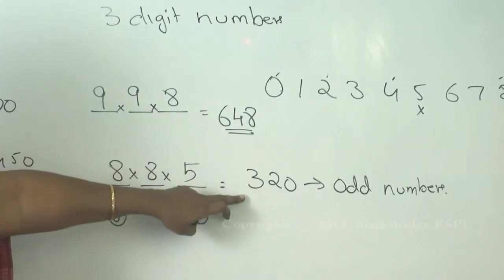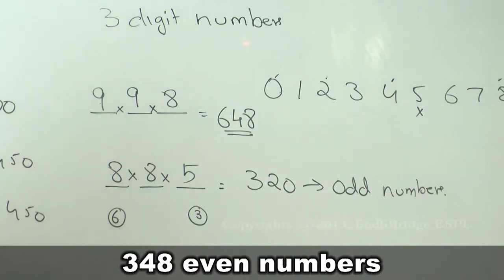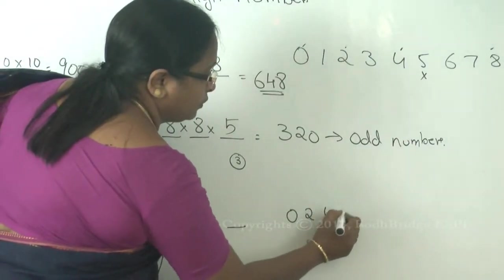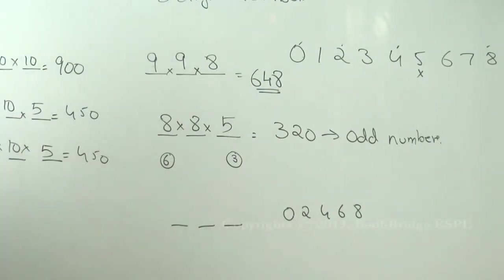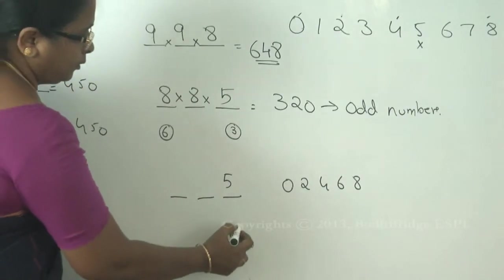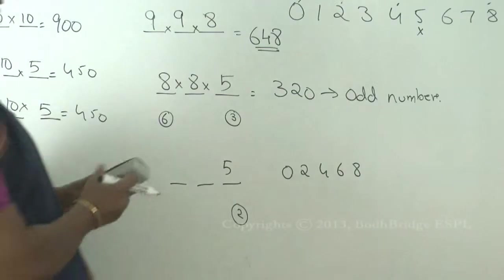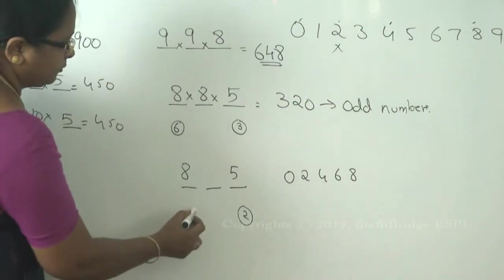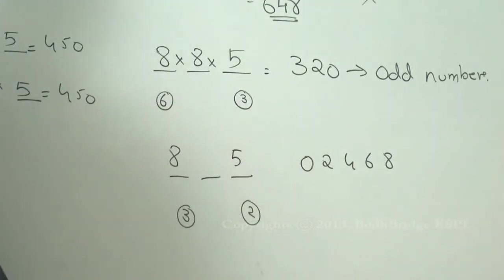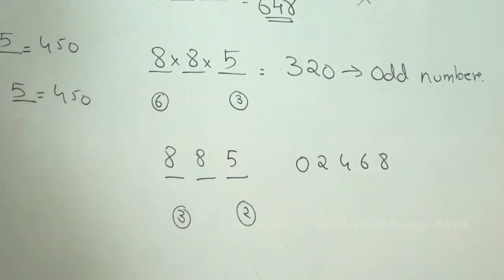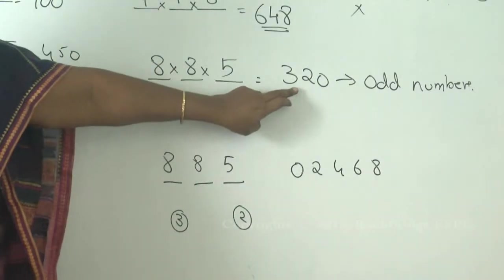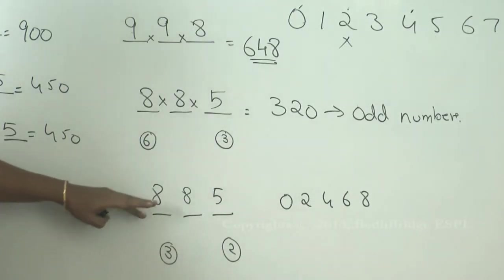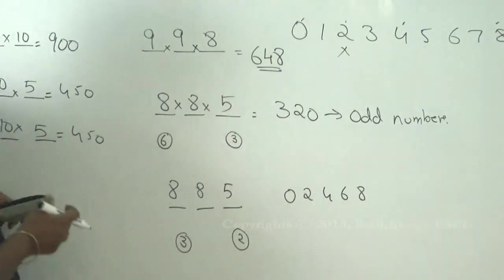One way to find even numbers is 648 minus 320 = 328. But let's verify using the permutation method. There are three slots, and even digits are zero, two, four, six, eight. Select one of the five for the last slot — five ways. If two is selected, you have nine remaining digits; zero cannot be in the first slot, so eight fill the first slot. Then eight digits remain for the middle slot. This gives eight into eight into five = 320, but that's wrong since odd was also 320 and total is 648.